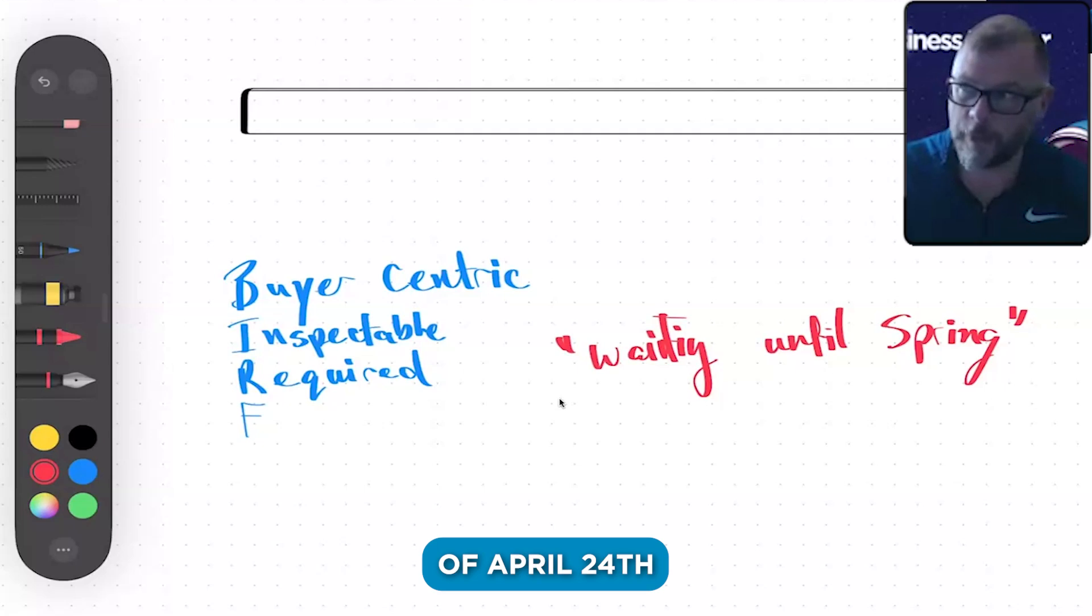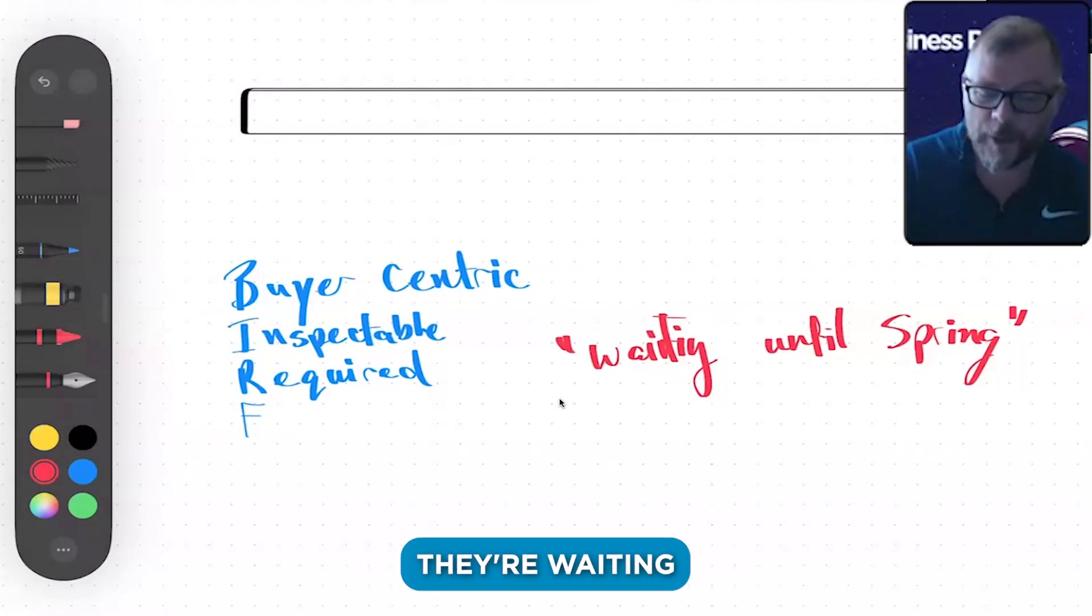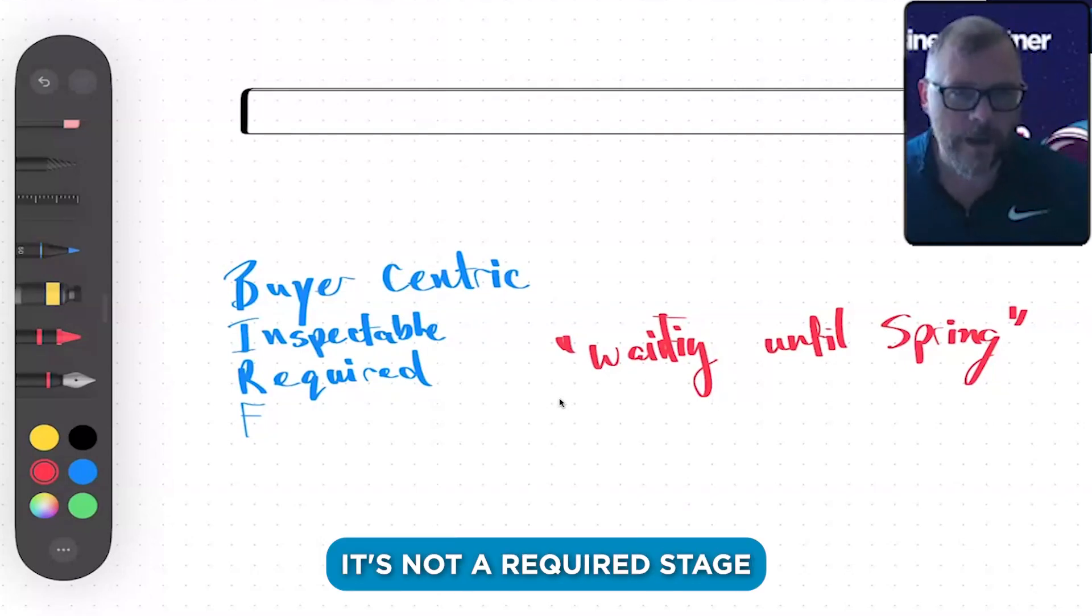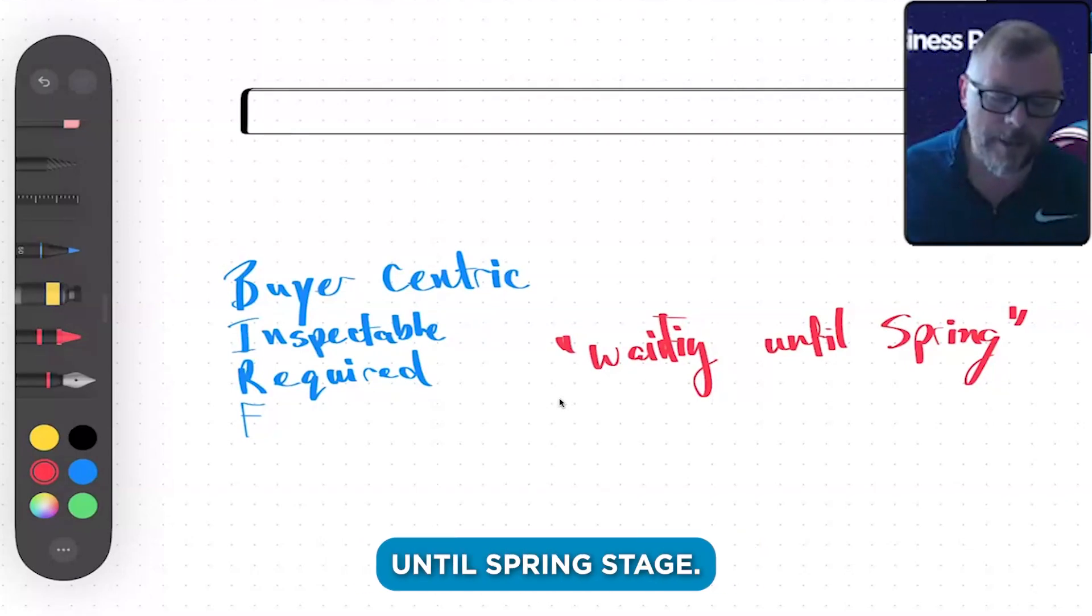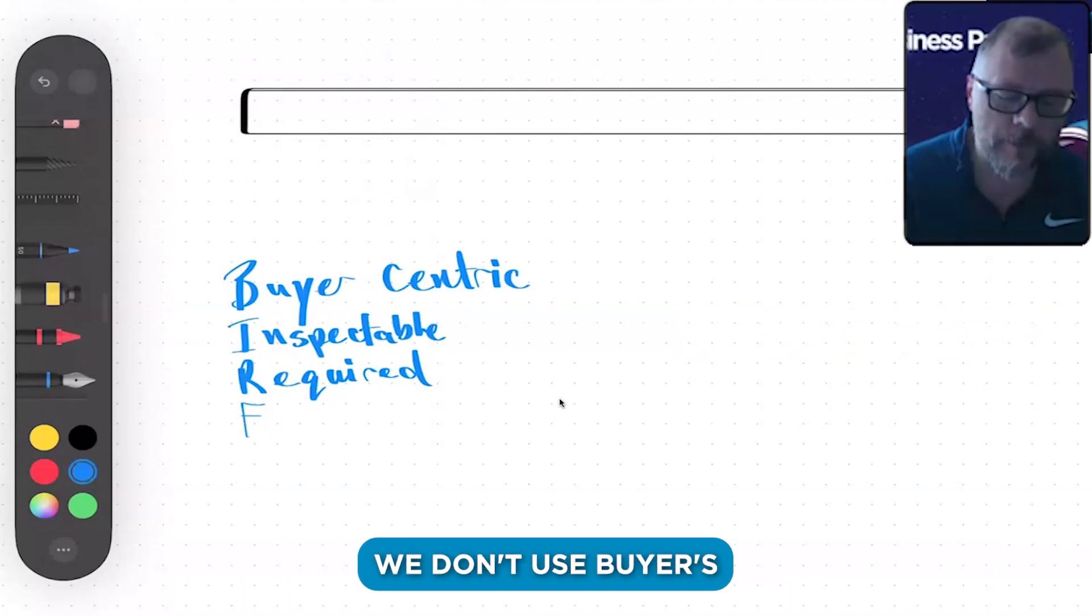If we have a close date of April 24th and it's August 26th, yeah, they're waiting until spring. The close date is inspectable, but it's not a required stage of our buyer's journey. Every customer does not go into a waiting until spring stage, so we use other properties or data to filter. We don't use buyer's journey stages to do that because it screws up reporting.